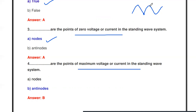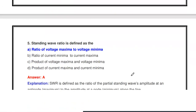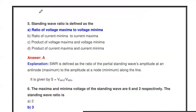Similarly: what are the points of maximum voltage or current in a standing wave system? In a standing wave system, the points where the maximum voltage or current occurs are called antinodes. So antinodes are the points of maximum voltage or current in the standing wave system.